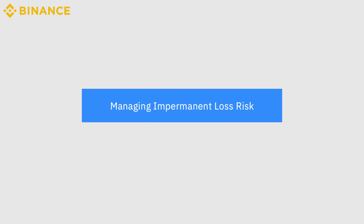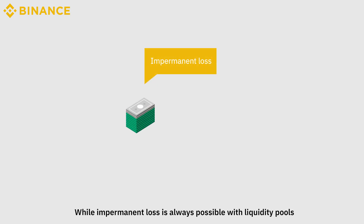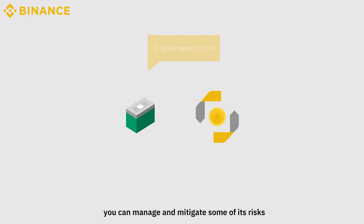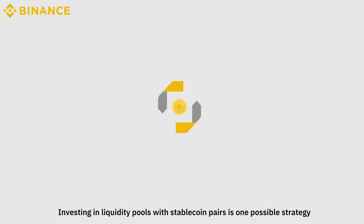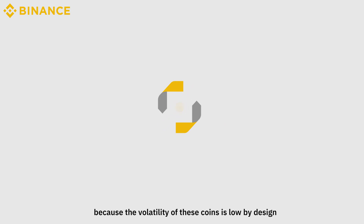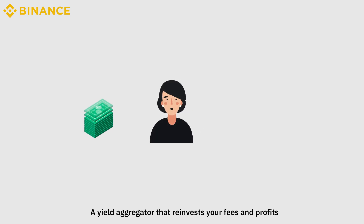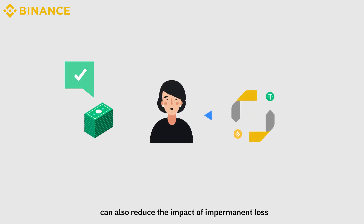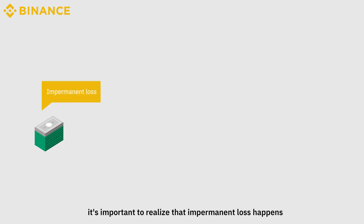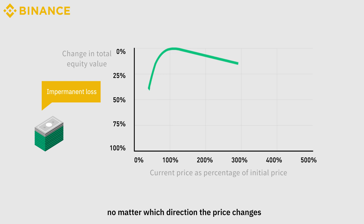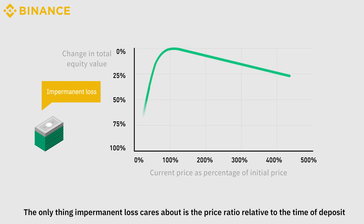Managing impermanent loss risk: while impermanent loss is always possible with liquidity pools, you can manage and mitigate some of its risks. Investing in liquidity pools with stablecoin pairs is one possible strategy because the volatility of these coins is low by design. A yield aggregator that reinvests your fees and profits can also reduce the impact of impermanent loss. It's important to realize that impermanent loss happens no matter which direction the price changes — the only thing impermanent loss cares about is the price ratio relative to the time of deposit.